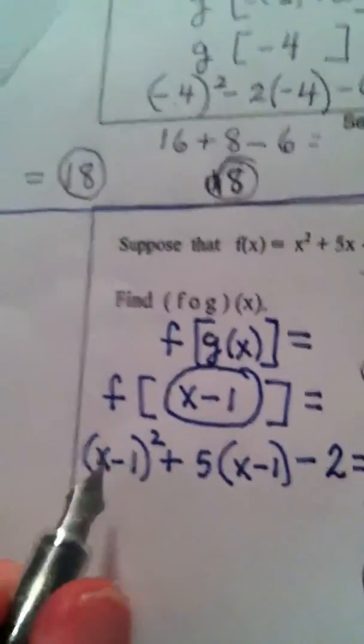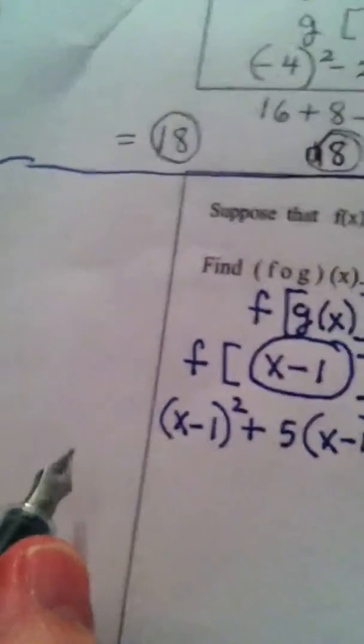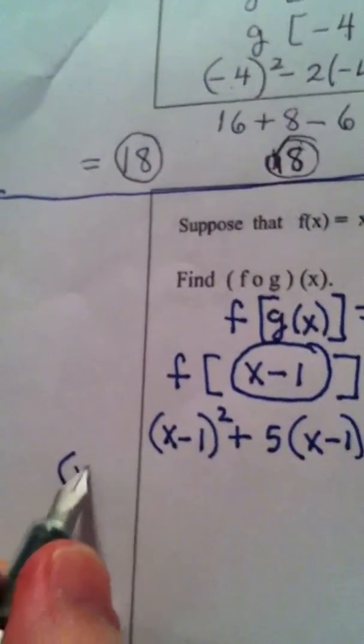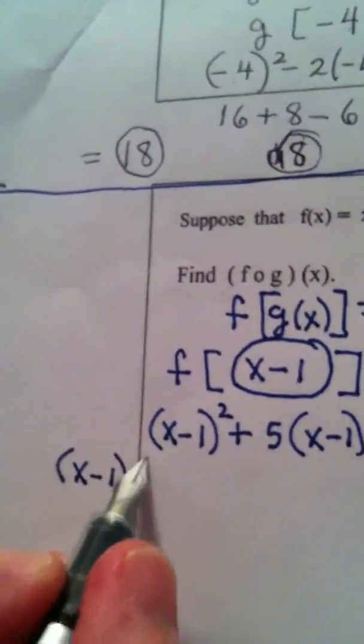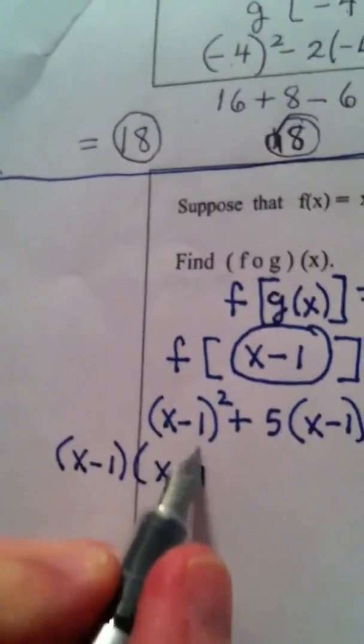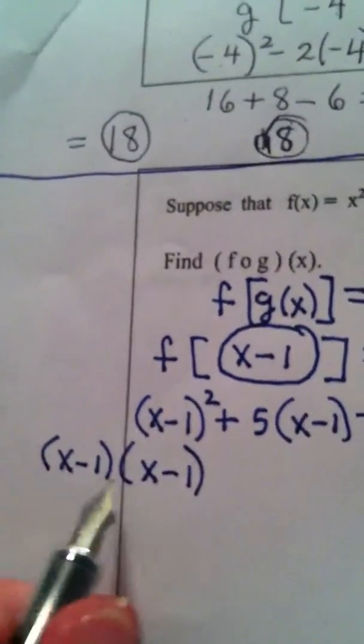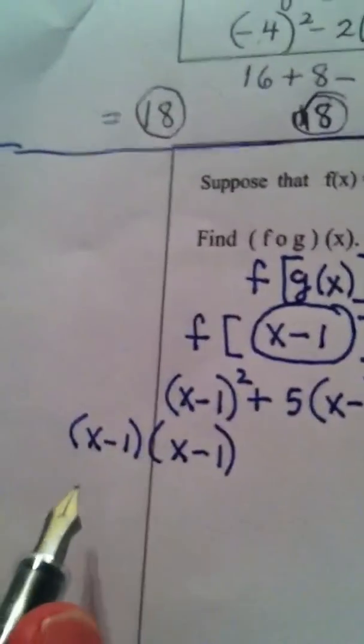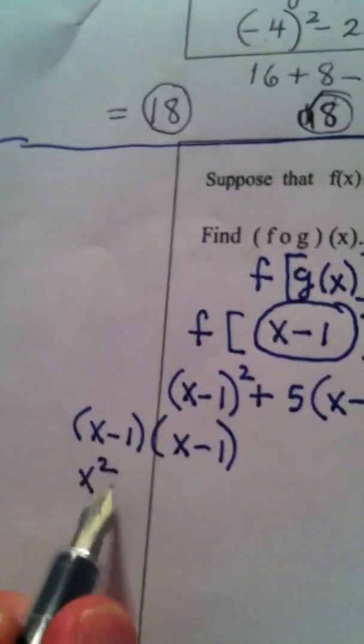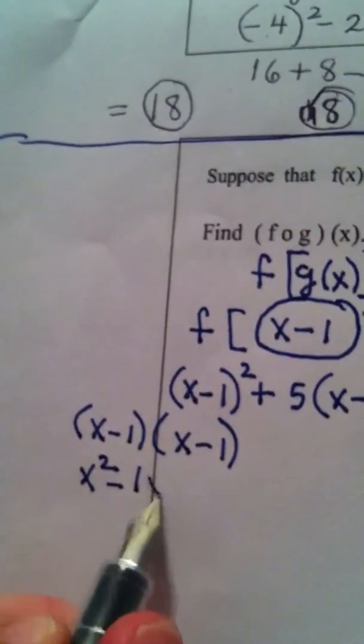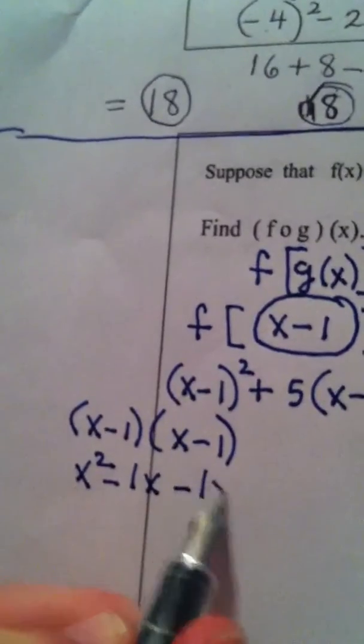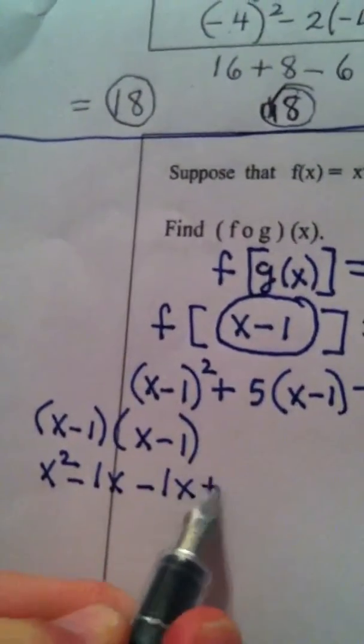Now, to continue here, this first part we do basically by distributing, some of you have been taught to call it the FOIL method. x minus 1 times x minus 1 is x squared minus 1x minus 1x plus 1.